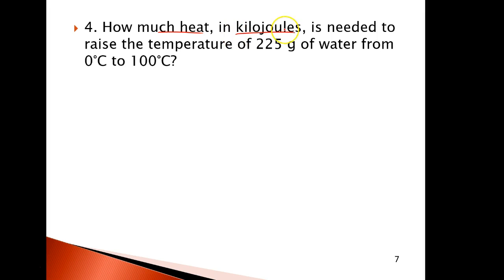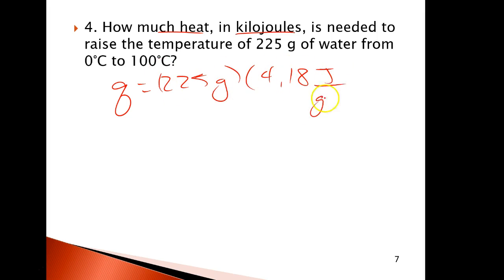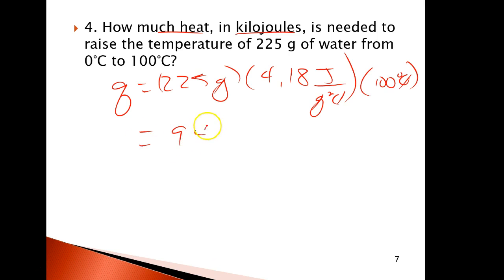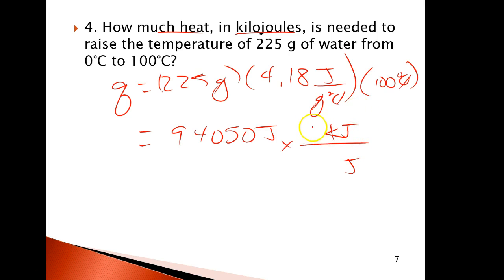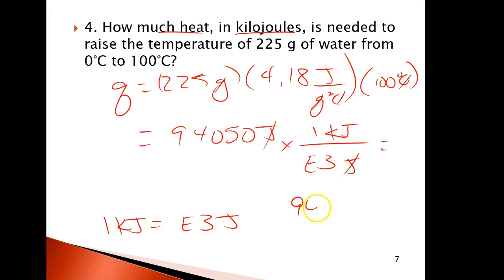This one involves kilojoules. Q is 225 grams times the specific heat of water, 4.18 joules over grams degrees C, times a temperature change of 100 degrees C. You cancel out your units and get 94,050 joules. To convert from joules to kilojoules: 1 kilojoule equals 10³ joules. Joules cancel out, and you get 94 kilojoules.